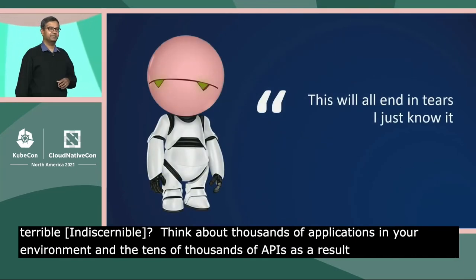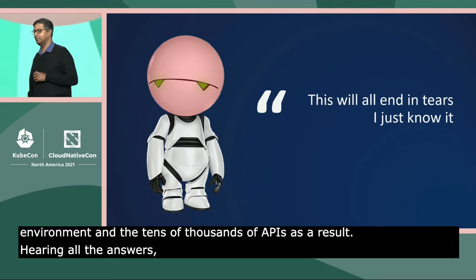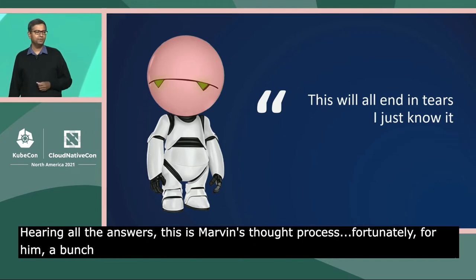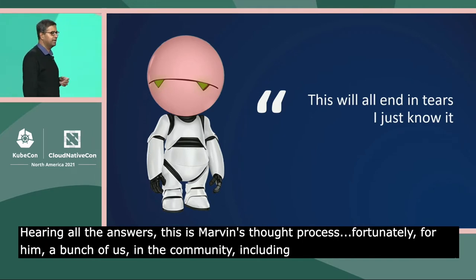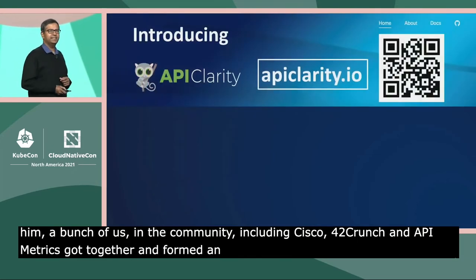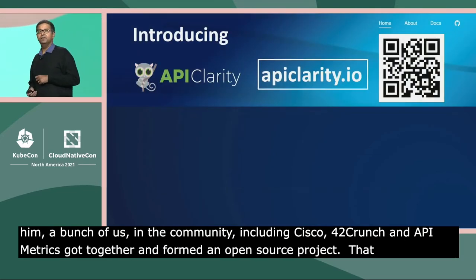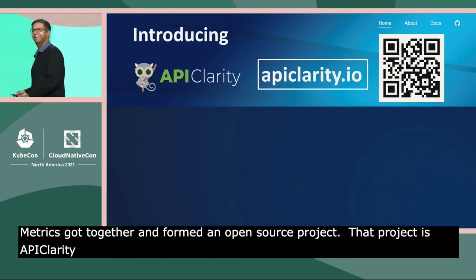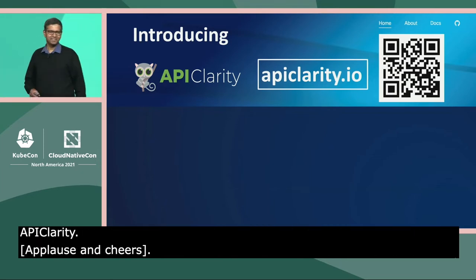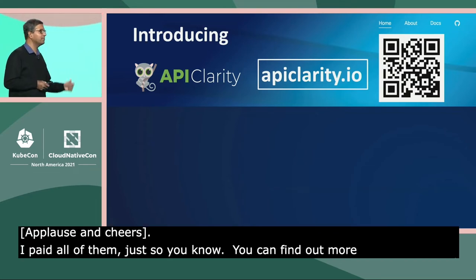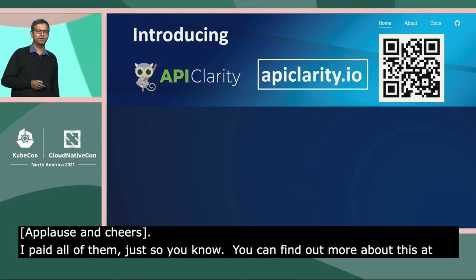Hearing all the answers, this is Marvin's thought process. Fortunately for him, a bunch of us in the community, including Cisco, 42Crunch, and API Metrics, got together and formed an open-source project. That project is API Clarity. You can find out more about this at apiclarity.io, or you can point your smartphone to the QR code up there.